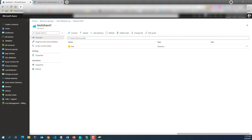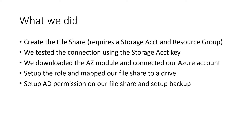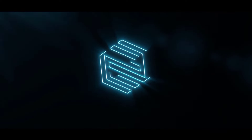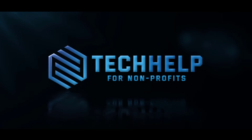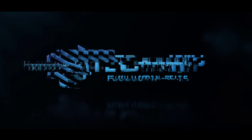We're finished. In this video, we created a file share that required a storage account and resource group. We tested the connection using the storage account key. Then we downloaded the AZ module and connected our Azure account. We connected our storage account to our on-premises Active Directory, set up the role, and mapped our file share to a drive. We set up AD permissions on our file share and set up backup. I'm hoping that this video helped you out — if it did, please hit the Like button. If you have any comments, you can put those below, and I've put the links I used in the description.